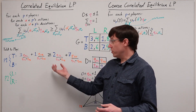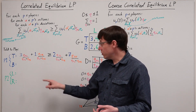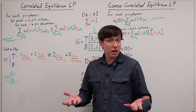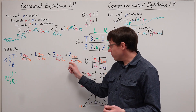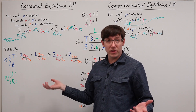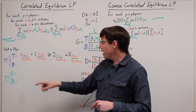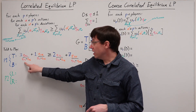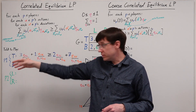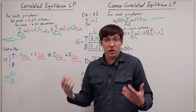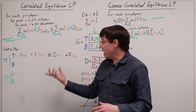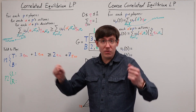Unfortunately, this constraint is not linear, since we are dividing by some of our linear program variables. But luckily, since we are dividing every single term by the same thing, we can simply cancel them all out. And as long as the denominator is always positive, multiplying through by that denominator won't change the inequality. That gives us a much simpler constraint that is, in fact, linear.